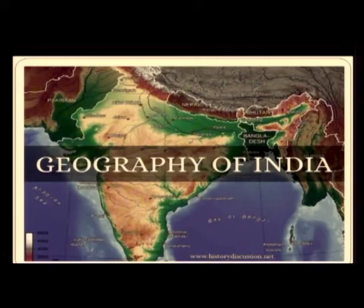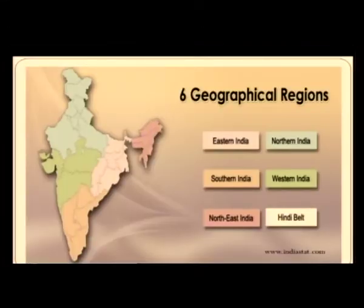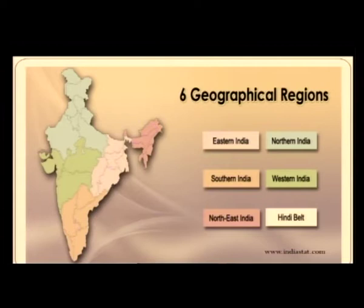If you look at the six geographical regions shown in color here, there are six of them: Eastern India, Southern India, Northeast India, Northern India, Western India, and the Hindi belt. These are the six basic geographical regions depicted here.